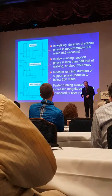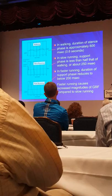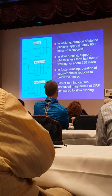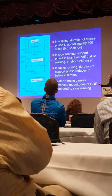As we go faster, the ground reaction force magnitudes increase dramatically. In world-class sprinters, you're looking at ground reaction force magnitudes of five times body weight. In slow jogging speeds, about two times body weight. You can see that the magnitude is much greater in running compared to walking.